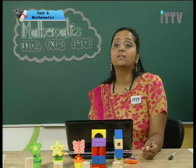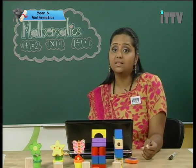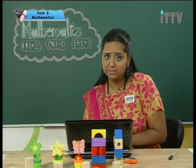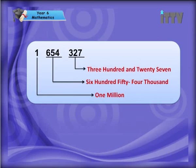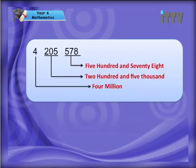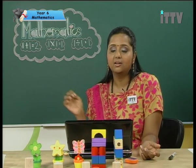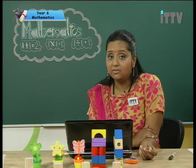Okay, let's move on to whole numbers. At your level, you would be learning the seven-digit number, which is the million. Now let's see how we pronounce the millions. The chart shows one million six hundred and fifty-four thousand three hundred and twenty-seven. Simple, right? Not that difficult. Let's move on to another example: four million two hundred and five thousand five hundred and seventy-eight. Simple, right? You just need to put the millions in front and the remainder is what you learned in Standard Four and Standard Five.